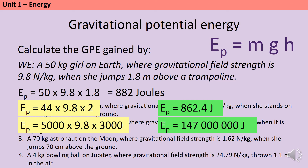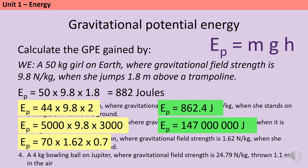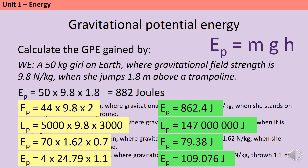For question three the mass is in kilograms and we have a gravitational field strength, but the height has been given in centimeters, so divide by 100 to get meters: 70 × 1.6 × 0.7 gives 79.38 joules. For question four: 4 × 24.79 × 1.1 gives 109.076 joules.